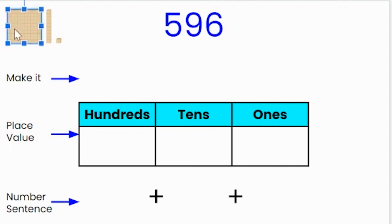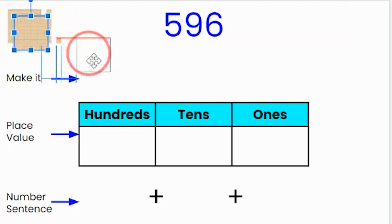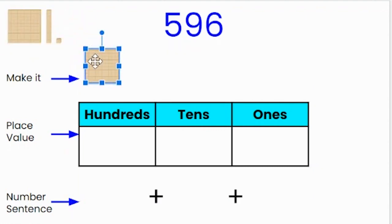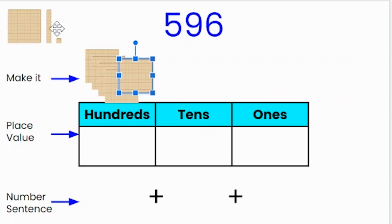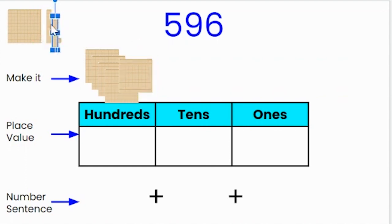Let's make it. I know that there are five hundreds — one hundred, two hundred, three hundred, four hundred, five hundred. I know that there are nine tens — ten, twenty, thirty, forty, fifty, sixty, seventy, eighty, ninety.